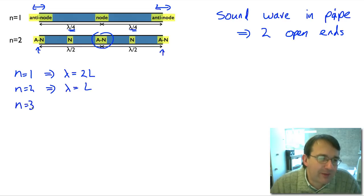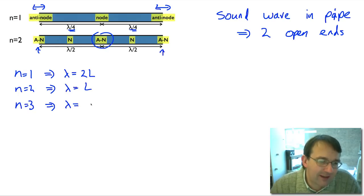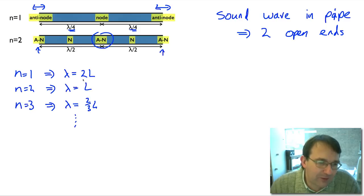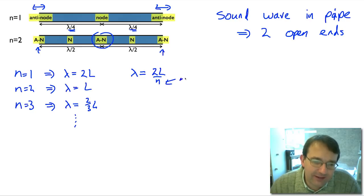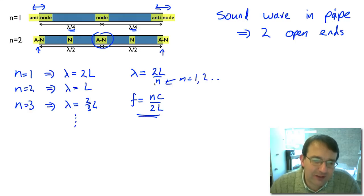For n equals 3, we have three nodes, two antinodes in between, and three half-wavelengths equal the pipe length, so the wavelength is two-thirds L. Extrapolating this, we find the same wavelength formula as for the string with two closed boundaries: lambda equals 2L over n, where n equals 1, 2, and so on. The frequency is just c divided by the wavelength, giving n times c over 2L. So we end up with the same allowed frequencies and wavelengths as for a string with two closed ends.